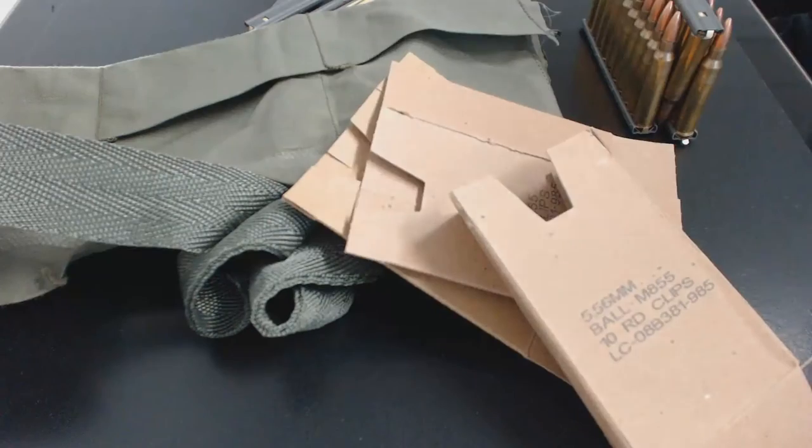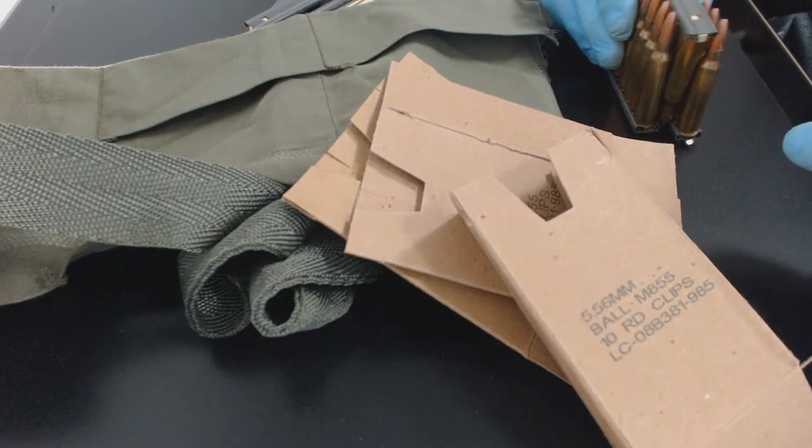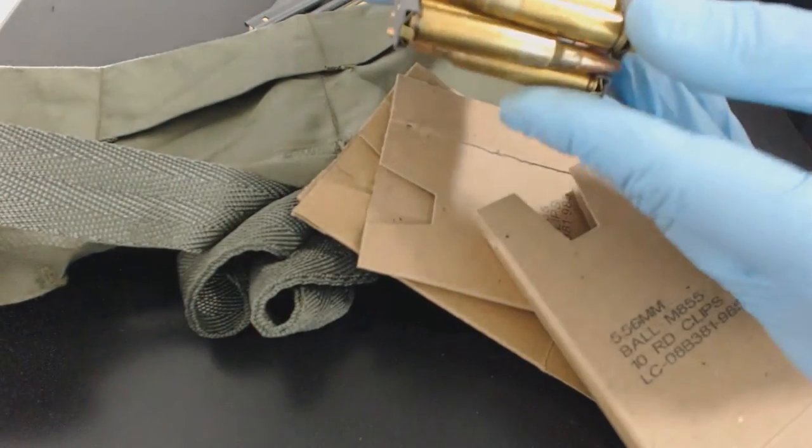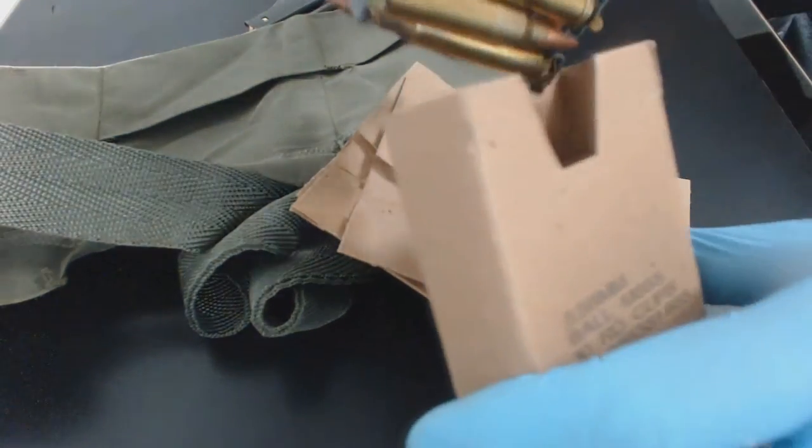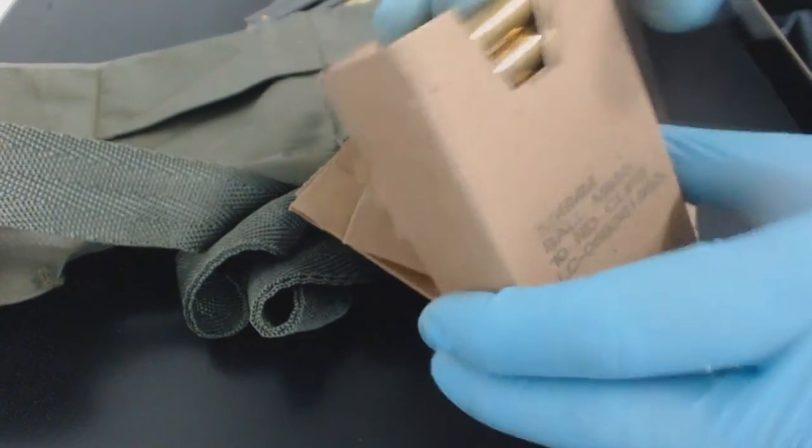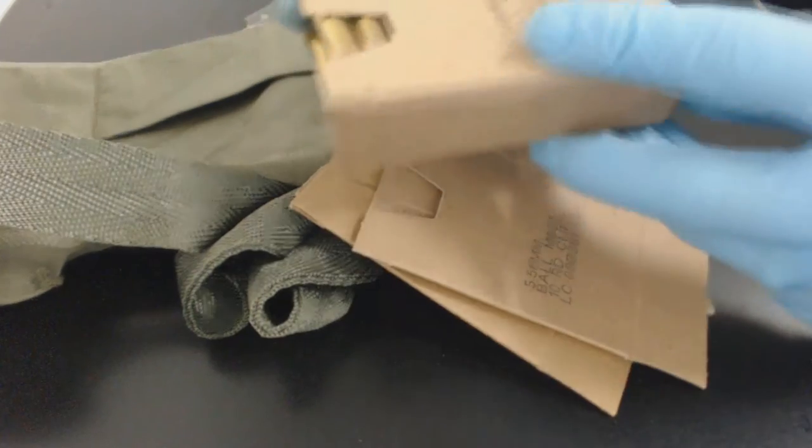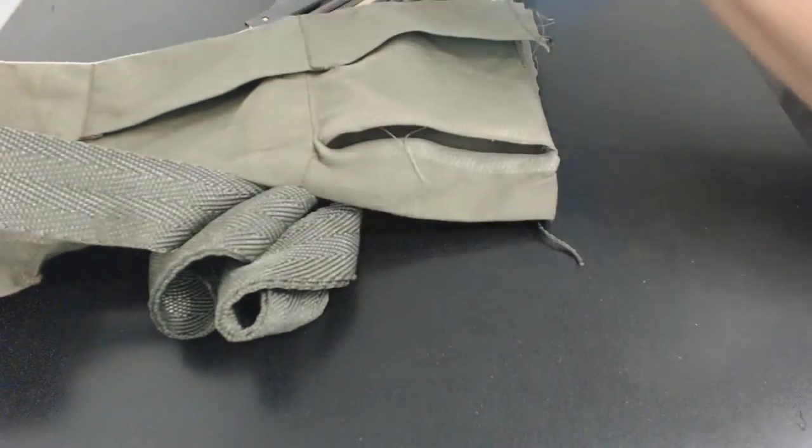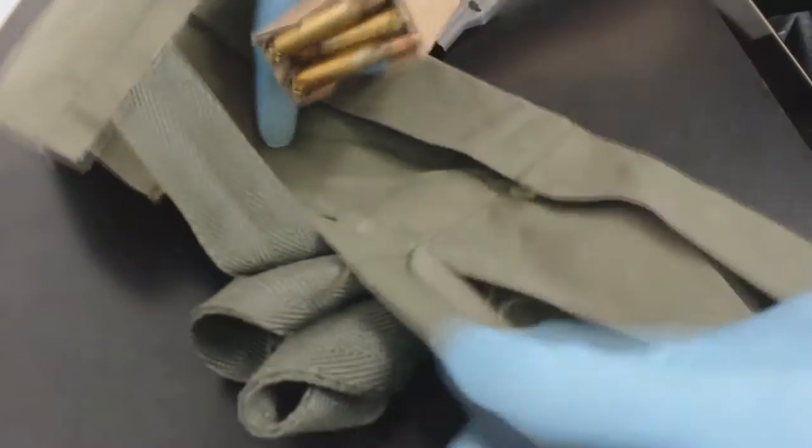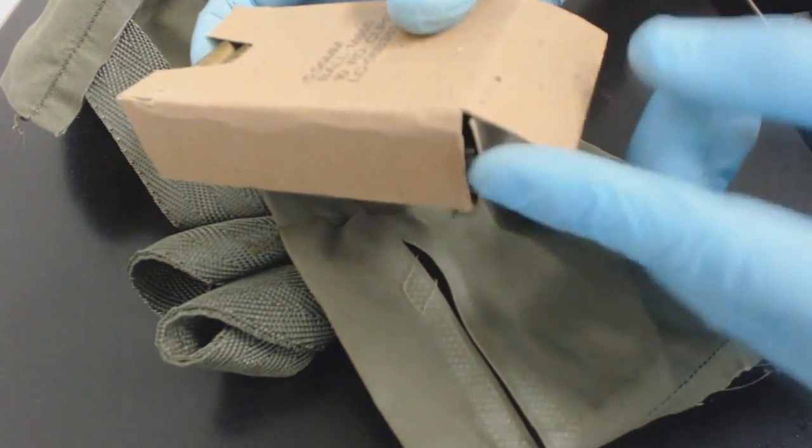These cardboards hold three stripper clips, a total of 30 rounds. You could use tape or glue to seal the end of the box.